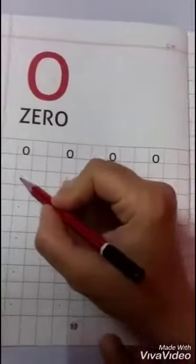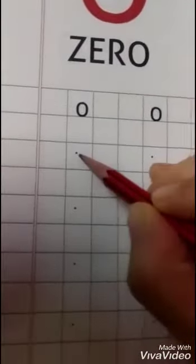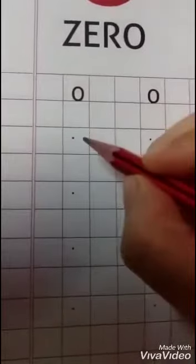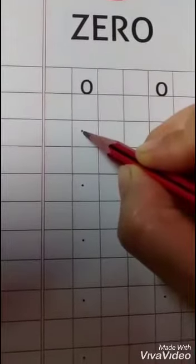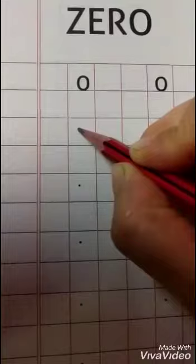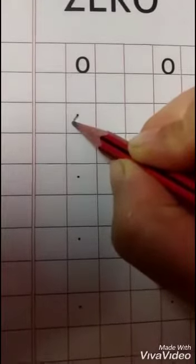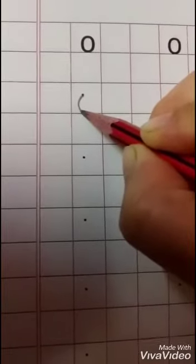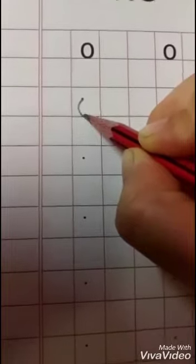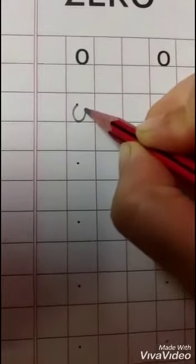Now, as you can see, this dot is given. So we'll start writing from this dot. We'll make a curve facing downward, facing down and then again make a curve facing up. This way we'll write 0.